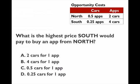The second question asks: what is the highest price the South will pay to buy an app from the North? The North produces the apps, and the South buys them. How does the South determine the most they can pay? It costs the South four cars to produce an app, so they're not going to offer the North anything more than four cars for an app. If they offered five cars for one app, that would be a bad deal — they'd be paying more than it costs them to produce it themselves. So the answer is four cars for one app.